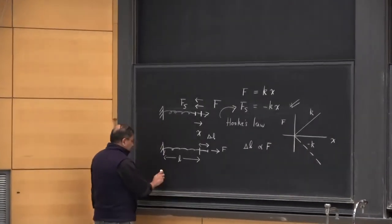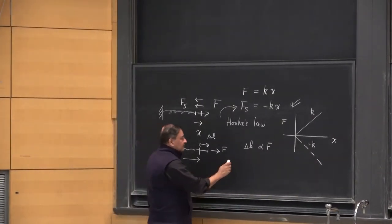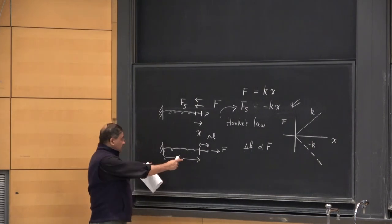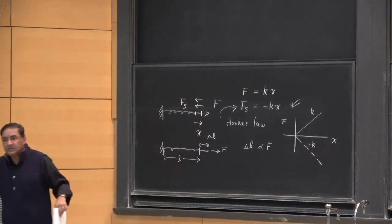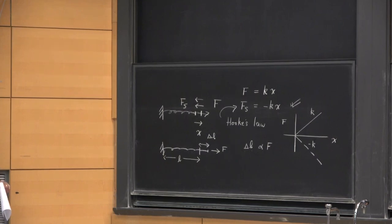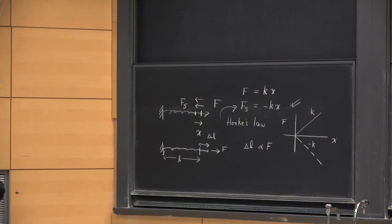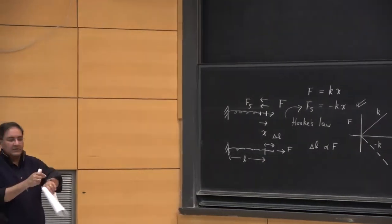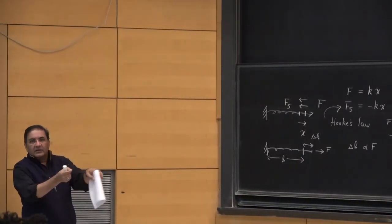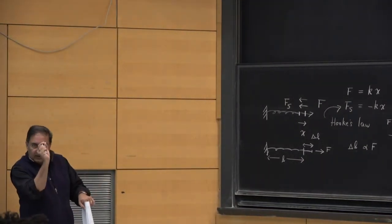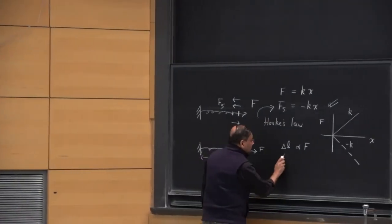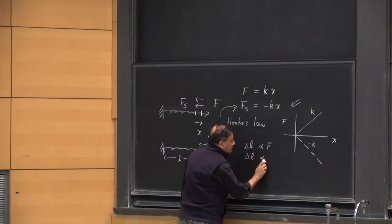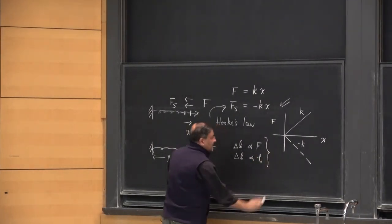It turns out, however, that delta L is more if the spring is longer. If you have a slinky and you pull it, the stretch would be quite large. If you have a tight little spring and you pull it with the same force, the elongation would be much tinier. So delta L is also proportional to the length of the spring itself.